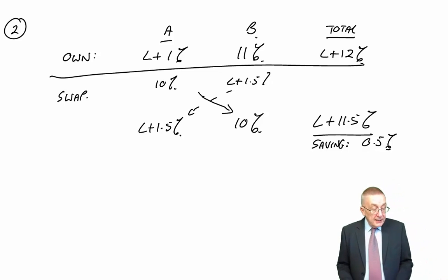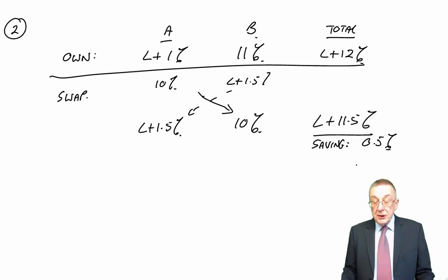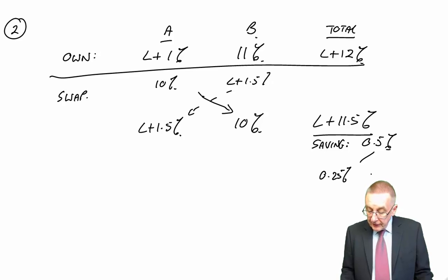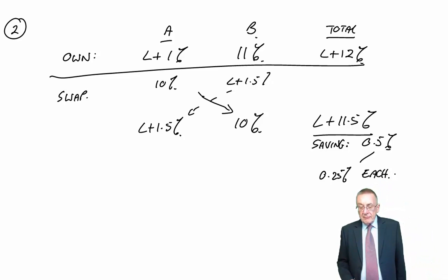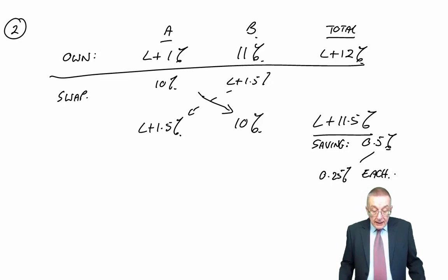And although like before, we're going to have to settle up between them, it would mean there's a saving to be made overall of half a percent. And because we're not told any different, you would assume that we're going to share it equally. So half to each, 0.25% each.